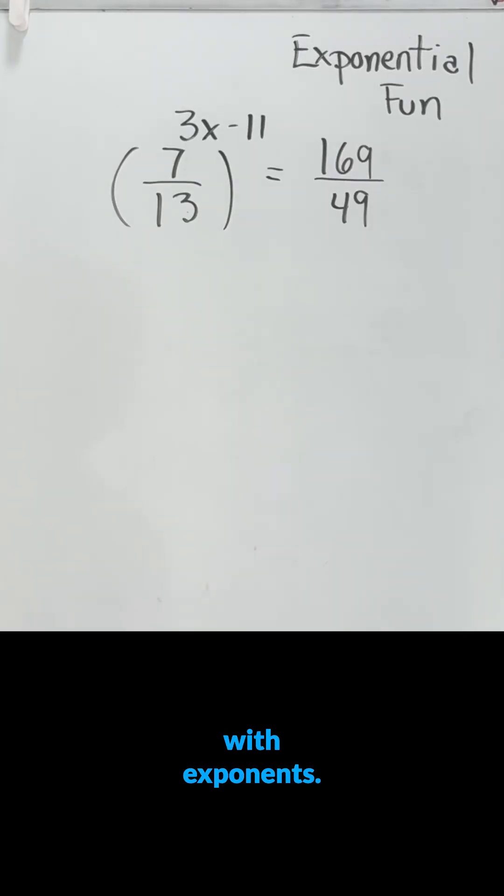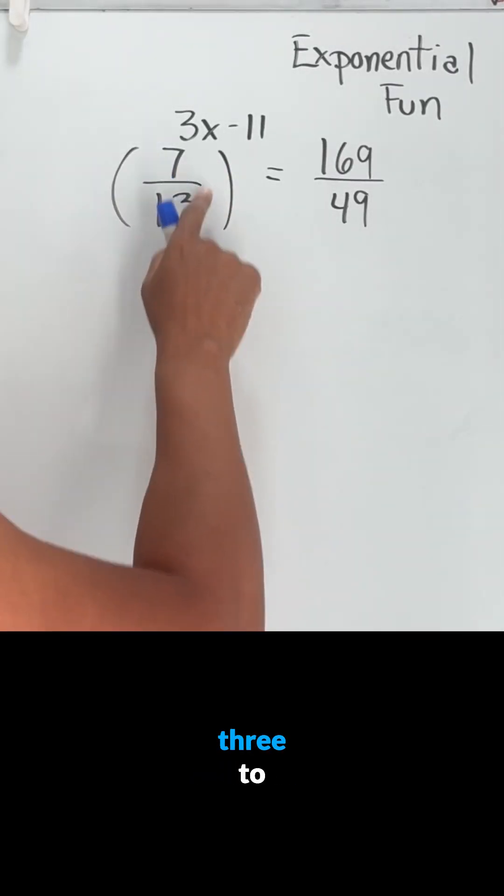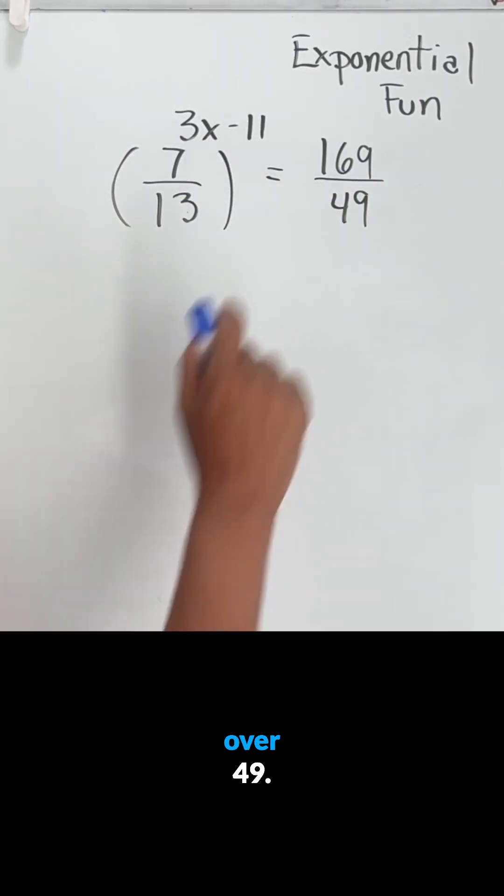Let's have some fun with exponents. Here I have the equation 7 over 13 to the 3x minus 11 power equals 169 over 49.